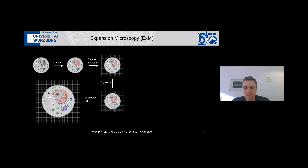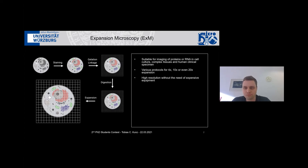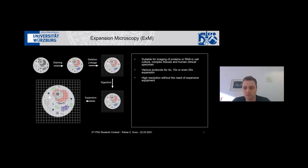This method, instead of taking a very fancy setup for imaging, you simply enlarge the sample, you get a better separation of your signals, and therefore also better resolution. There are various protocols that have already enabled the imaging of RNA and proteins in tissues and cell culture for several different expansion factors. For example, if you have an expansion factor of four, the resolution will be roughly fourfold improved.